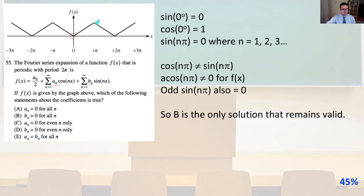At positive π, f of x is not zero, but then again at 2π, f of x again is zero. So let's again just revisit some trigonometric truths that sine of zero degrees equals zero, cosine of zero degrees equals one, and sine of nπ is going to equal zero, where n equals one, two, and three.